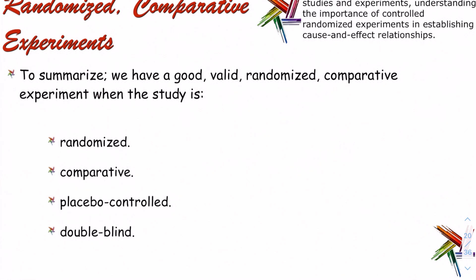To summarize: we have a good, valid randomized comparative experiment when the study is randomized, comparative, placebo controlled, and double blind. We'll pause here because this is a lot of information. It's really important that we start understanding these terms and are able to apply them. We'll wrap up this chapter and Unit 3 in the next video.